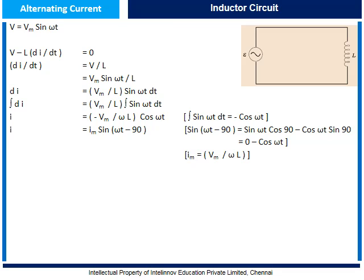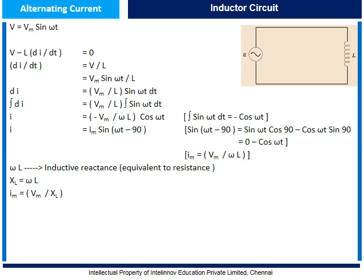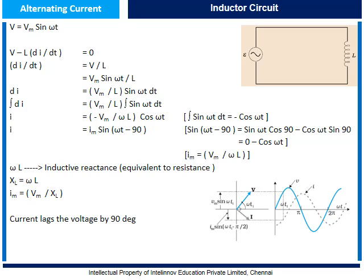Here, ωL acts as the resistance in an inductive circuit and is given the name inductive reactance, symbolized as XL. Thus Im equals Vm/XL. Comparing the equations V equal to Vm sin ωt and I equal to Im sin(ωt − 90°), we find that the current lags the voltage by 90 degrees. Also, the average power supplied to an inductor over one complete cycle is zero.